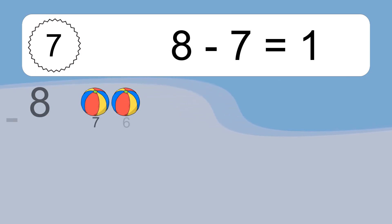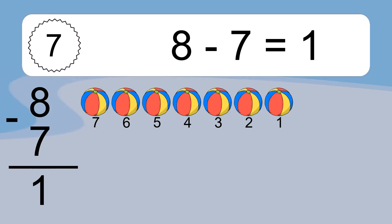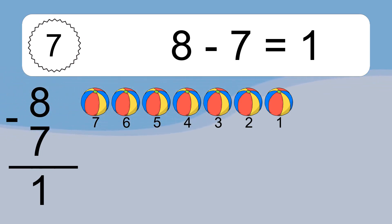8 minus 7 equals what? 8 minus 7 equals 1. Let's count it: 7, 6, 5, 4, 3, 2, 1.